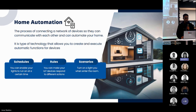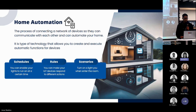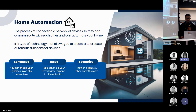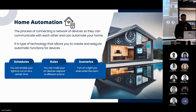For example, a schedule: you can enable your lights to switch on at a certain time when it gets dark. For rules, you can make your IoT device respond to different actions. And for scenarios, you can turn on a light when you enter a room. Those are just basic examples of how you can enable home automation.